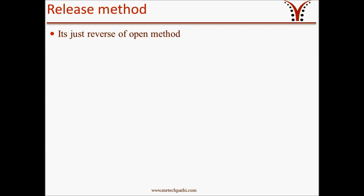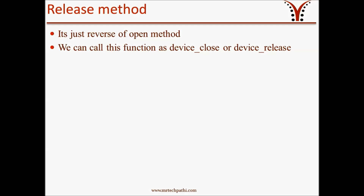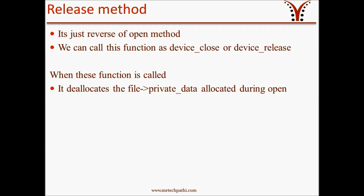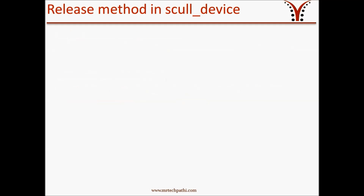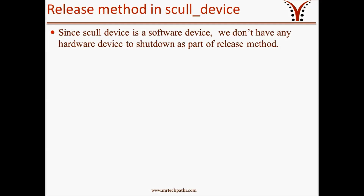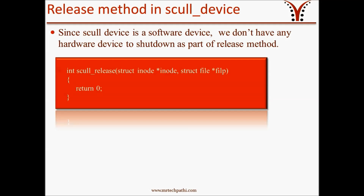Now coming to our second topic, release method. It is just the reverse of open method. We can call this function device_close or device_release. When this function is called, it deallocates the file private data allocated during open, and it shuts down the device on last close. Let's see how the release method is implemented in our skull device. Since skull device is a software device, we do not have any hardware device to shutdown as part of release method. So coming to the implementation, we just return 0 in the skull_release function.